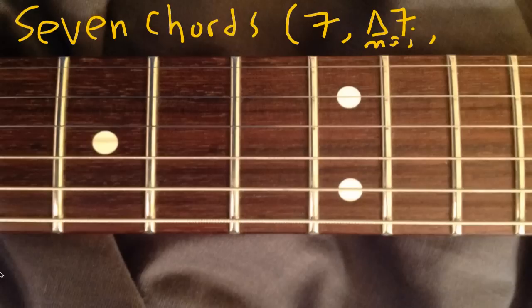If you're looking at stuff online, you see M-A-J seven because there's no triangle. If you're looking in fake books or real books for jazz songs, you'll see the triangle.